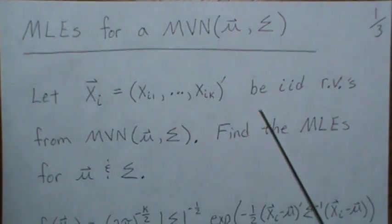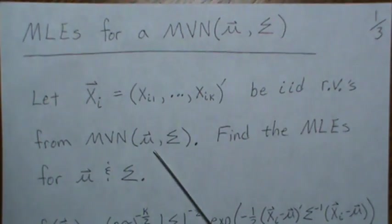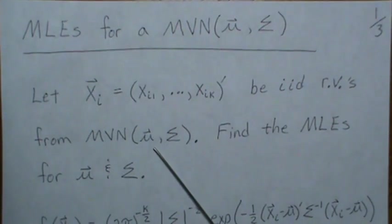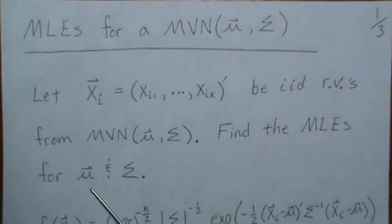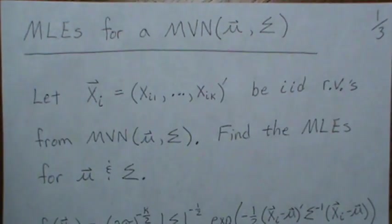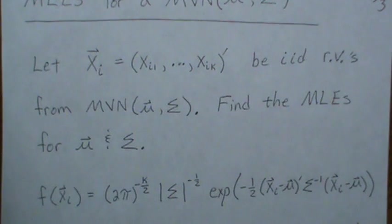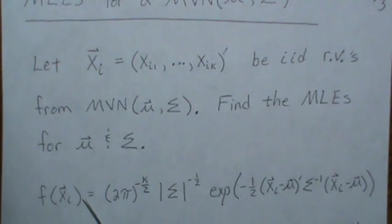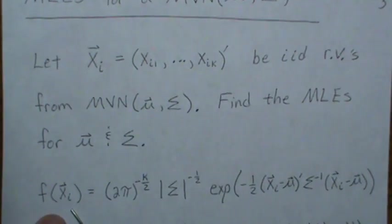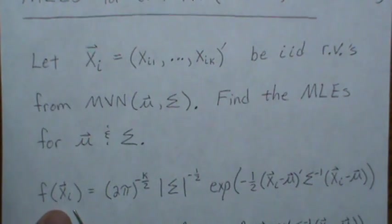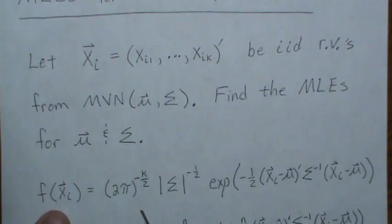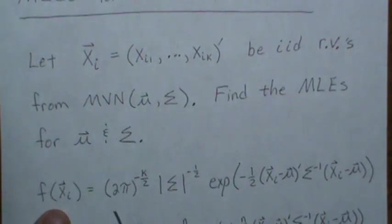We're going to let X_i be this k-dimensional vector. They're going to be IID random variables from this multivariate normal density. We want to find the MLEs for mu and sigma, and the way we do that is we first find the density for one of the X's.